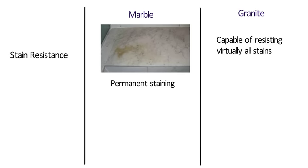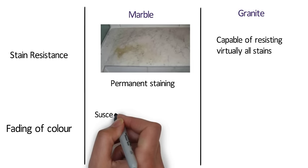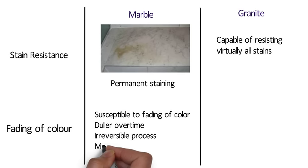Regarding fading of color, marble is susceptible to fading and becoming duller over time. Unlike stains which can be removed, a dulled marble has no way of getting its shine back — it is an irreversible process and a major drawback of marble. Granite, however, can retain its color.